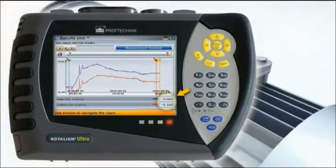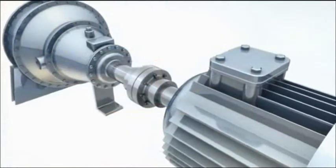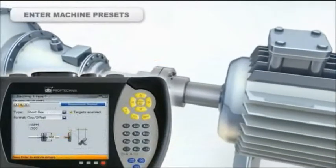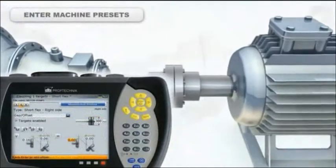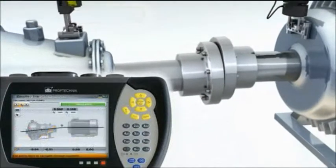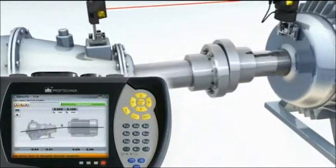Presets from Live Trend can now be entered as targets during the cold alignment process to compensate for anticipated positional changes. The biggest contribution one can make to lower the operating costs of machines is to align them correctly using accurate target values.